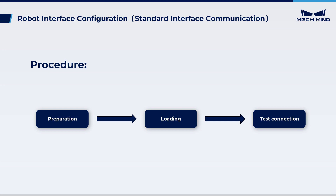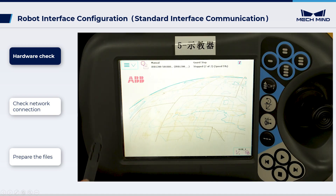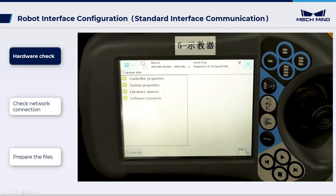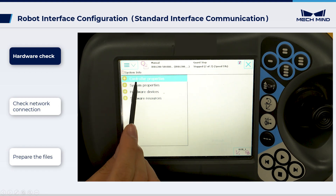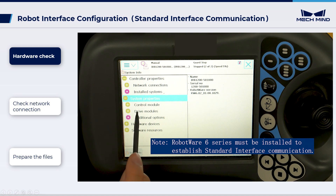First, let's begin with the preparation. Ensure that you have selected a 4-axis or 6-axis ABB robot. Follow these steps to verify the installation of the robotware option 616-1PC interface.